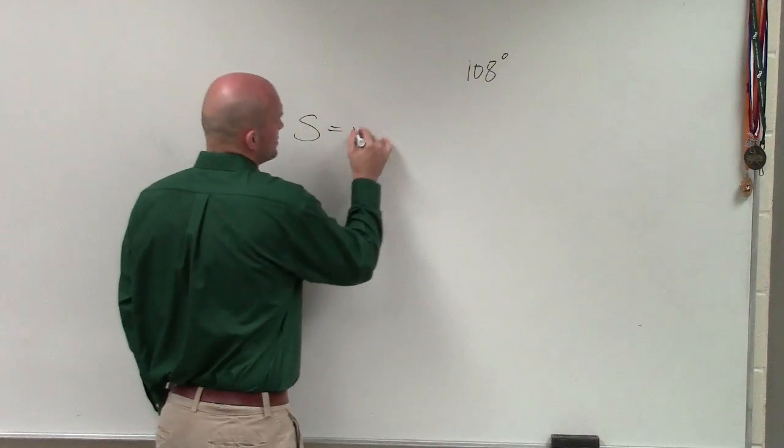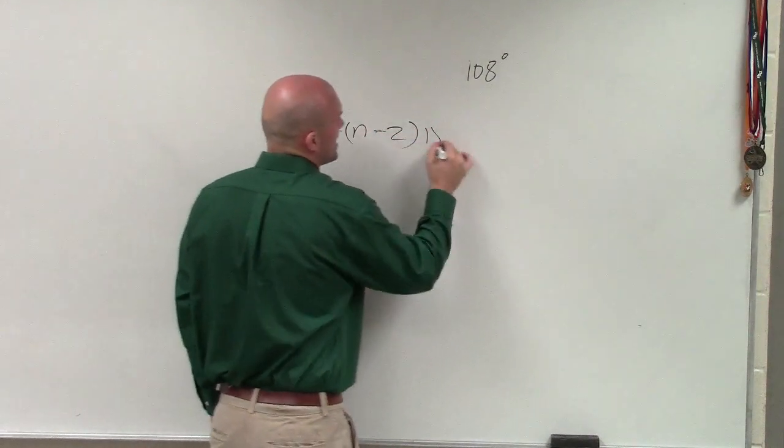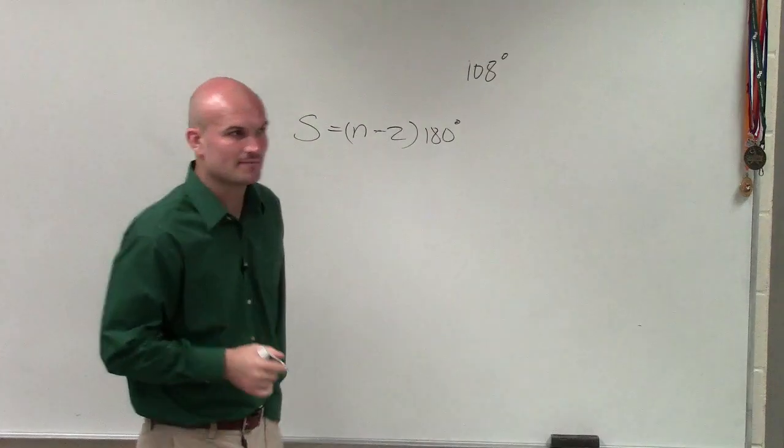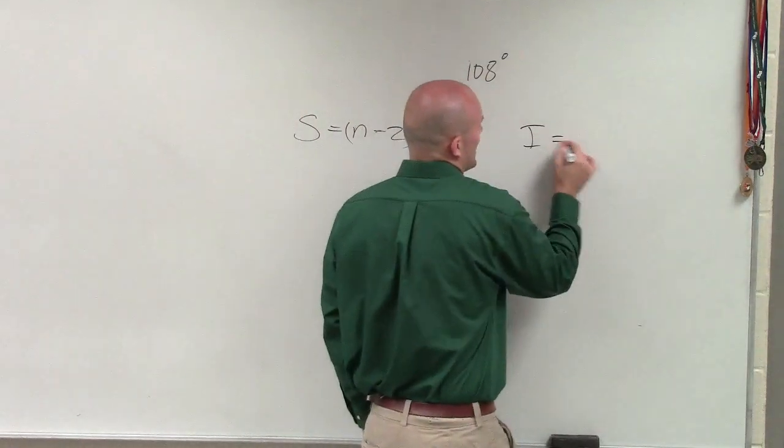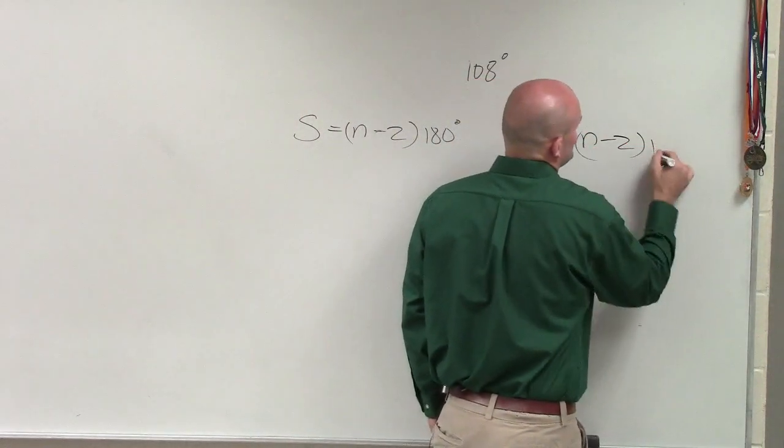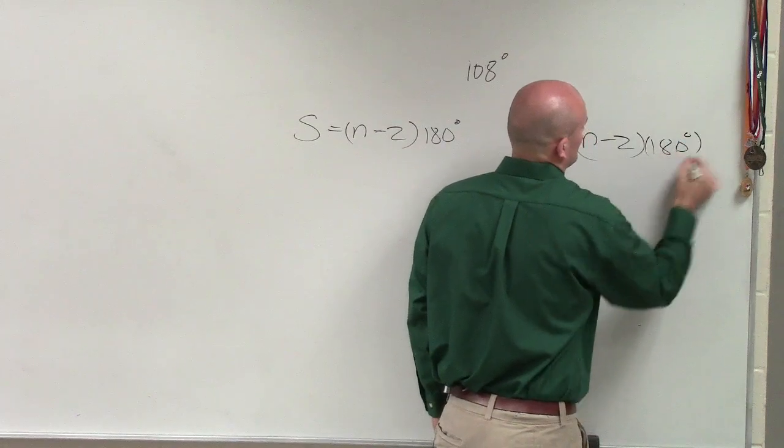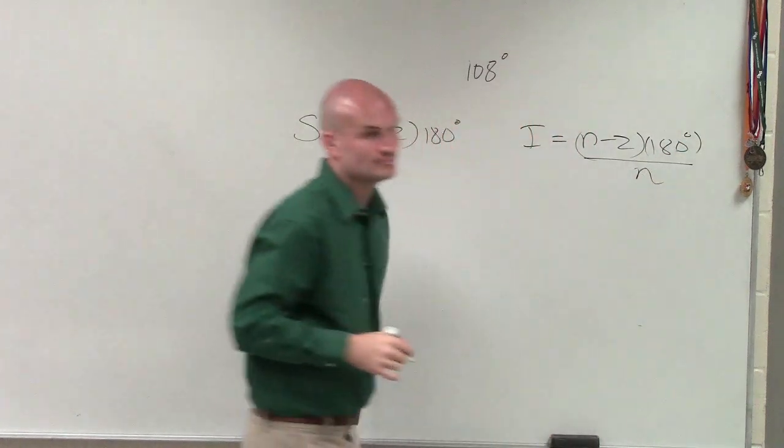The sum of interior angles is n minus 2 times 180. That's for a polygon. The measure of one interior angle is n minus 2 times 180 divided by n. Right?